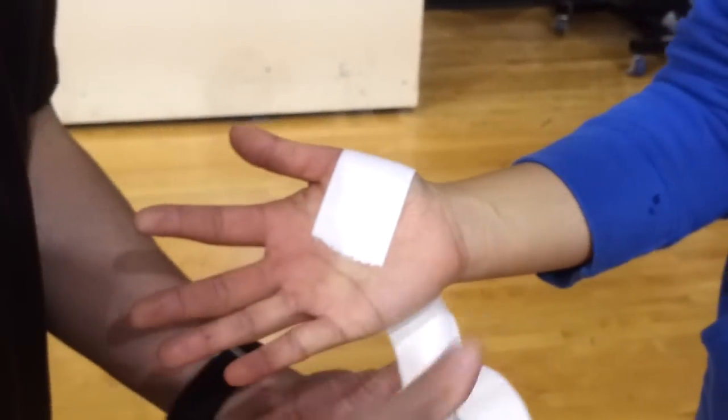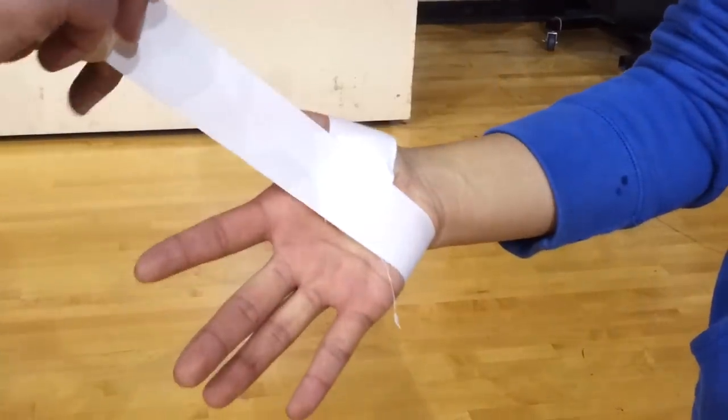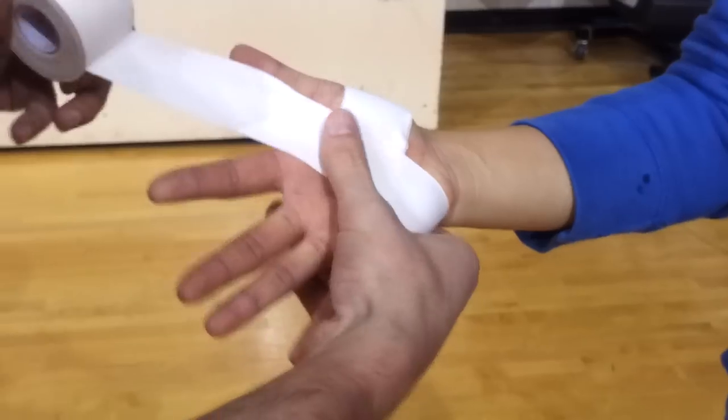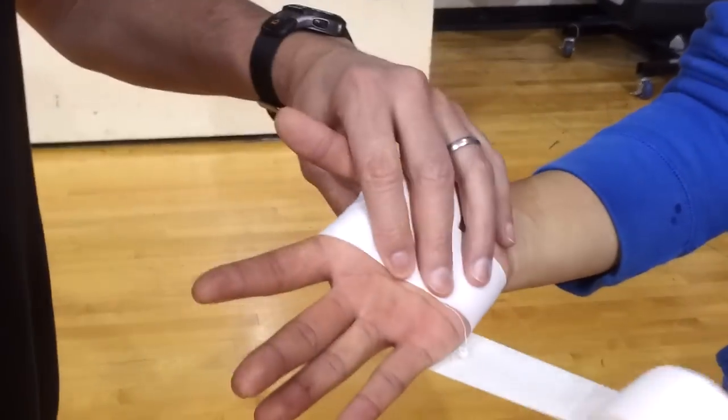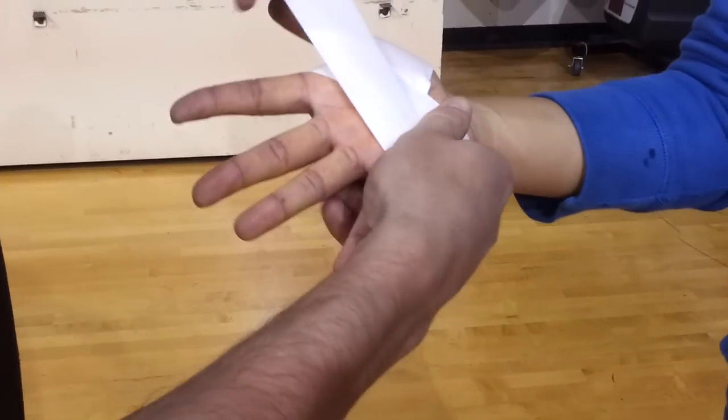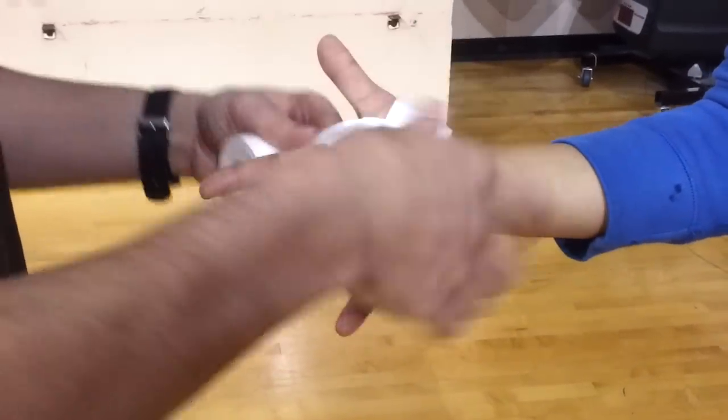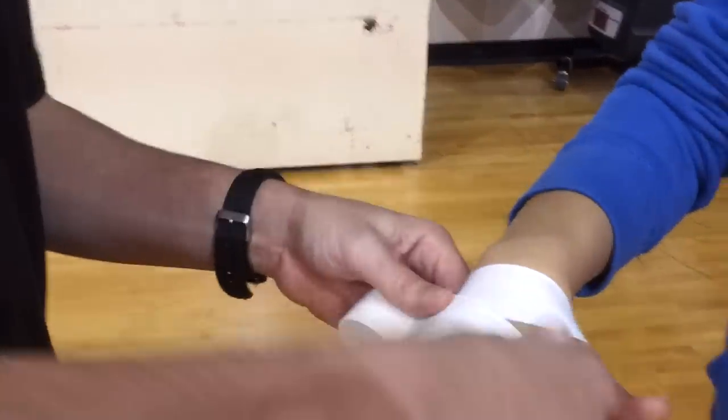First thing we're gonna do, we're gonna anchor right down into the palm and come up across through the web space of the thumb. Just pinches a bit through there so it's not gonna give you a tape cut. Then spread out your fingers, make them rigid. We're anchoring right across the whole hand here, again pinching there and then turning over.